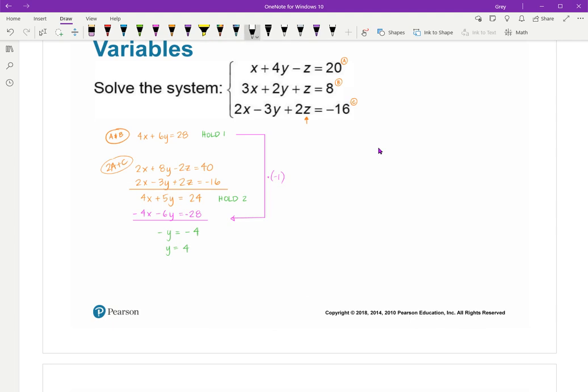Now, I'm going to take that and plug it in. You can plug it into either one of the hold equations. I chose hold number 2. So, I'm going to put parentheses where I would have a Y. 4X plus 5Y and Y is 4. So, 4X, 5 times 4 is 20. When you subtract that, 4X is going to equal 4. So, X equals 1.